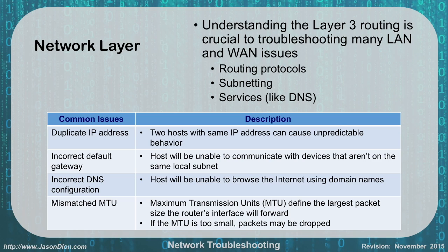Mismatched MTUs: the Maximum Transmission Unit size is defined as the largest packet size the router will forward. If the MTU is too small, packets will be dropped. MTUs are usually set at 1500 by default. This can become a problem when using IPsec — adding encryption pads packets and can increase their size beyond what the router accepts, causing dropped packets. Check your MTU size if this is suspected.